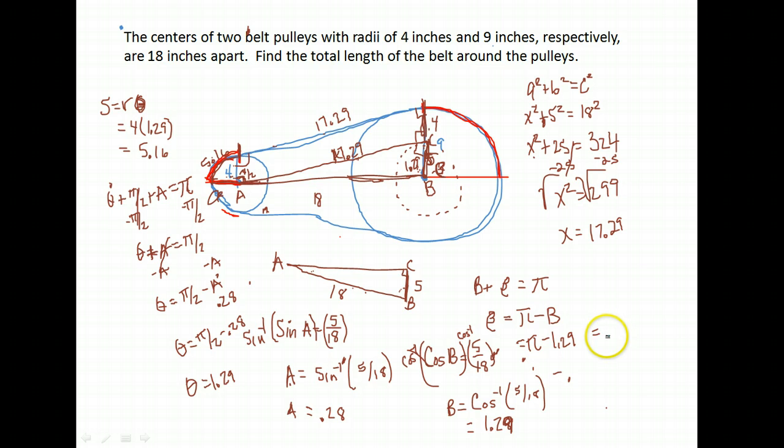When I do that, I get 1.852. So that means my angle β here in radian measure is 1.852.